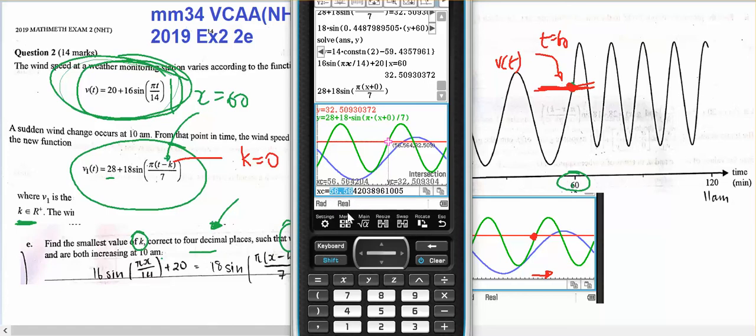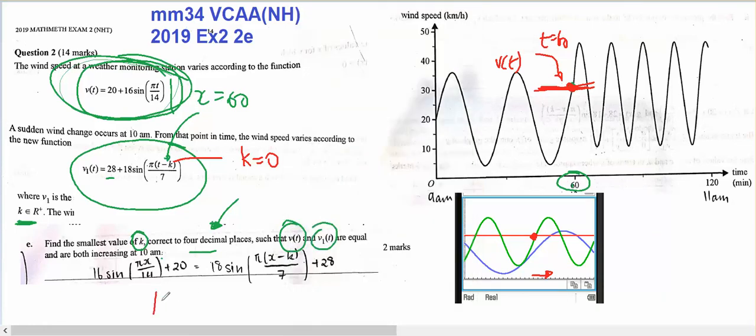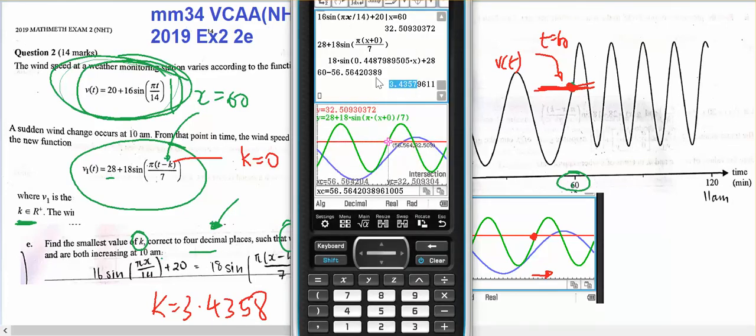56.56, and I'd like instead that to be moved over to 60. So I'm going to do four decimal places, so I might take all of that and edit copy, and 60 minus edit paste, 3.4358. So k equals 3.4358, and I'm just going to double check that by putting...